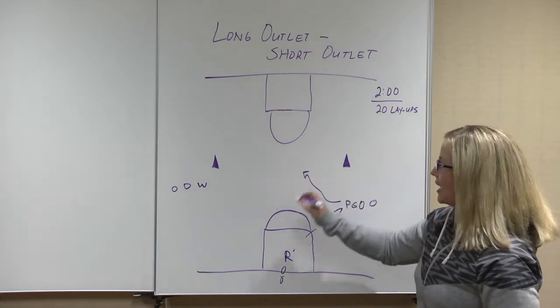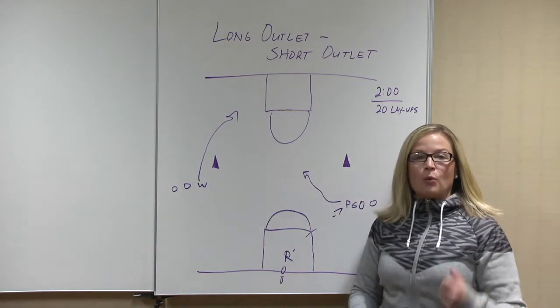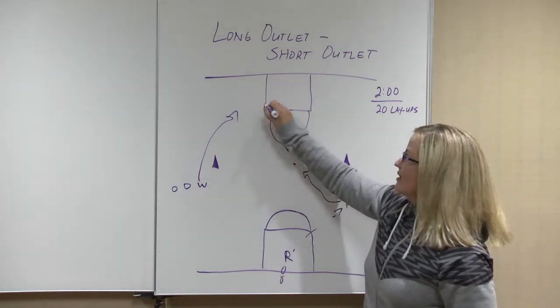We're going to go here. We're attacking the center circle. Your wing line is sprinted. Wing is going to lay it up. Point guard advances the ball.